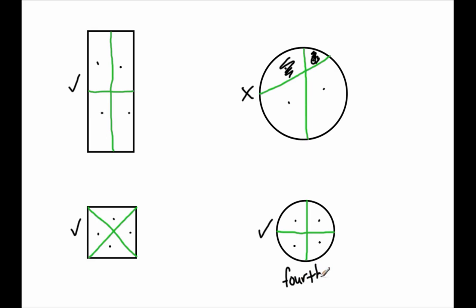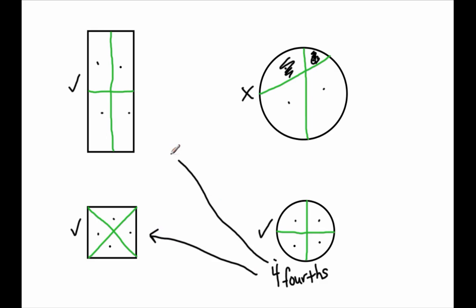This is showing fourths — how many fourths is it showing? Four fourths. As is this picture showing four fourths, and this picture showing four fourths. This one is showing four shares, but they are not equal, so they do not get the distinguished name of fourths.